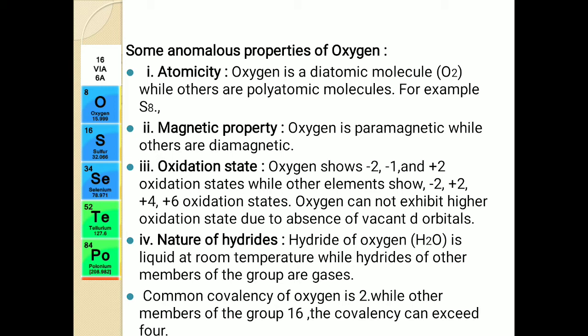The third property is oxidation state. Considering the electronic configuration, the last shell has six electrons and, as per the octet rule, to get a stable electronic configuration it requires two more electrons. Hence, the general oxidation state shown by all of these elements is minus two. But oxygen shows some exceptions.